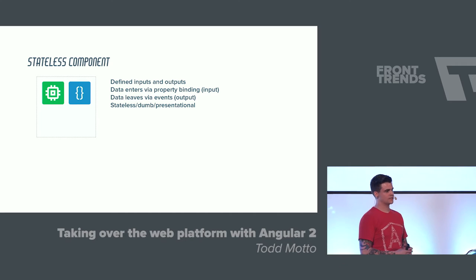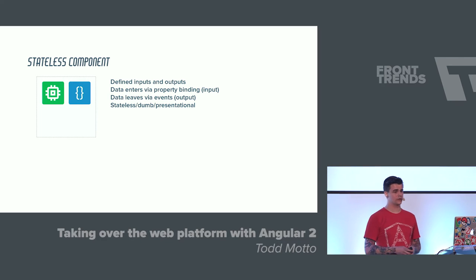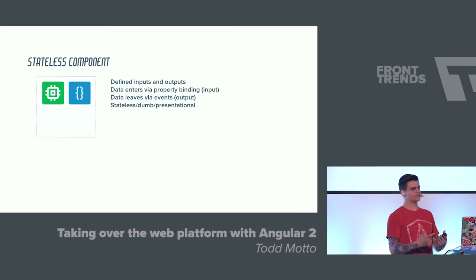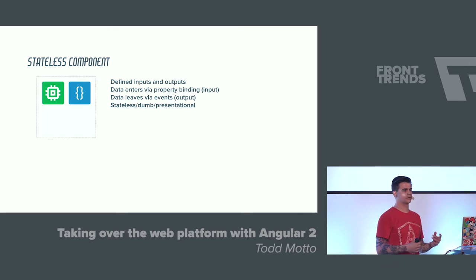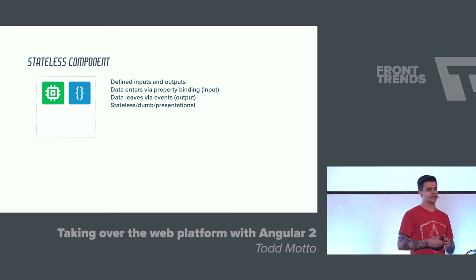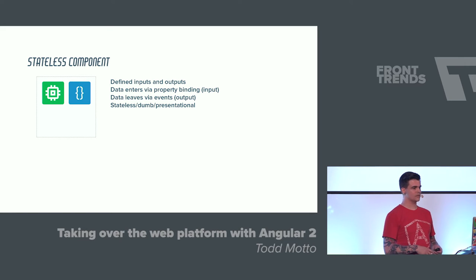With a stateless component — also called a dumb component or presentational component — they have defined inputs and outputs. You can pass some data into a component, it can do something with that data, and pass it back up. It takes data via an input using property binding, does something with it, and passes it back up via an event output. It hasn't made an XHR request to the back end; it's literally just passed some data.